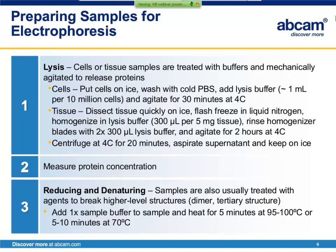The final step of sample prep is reduction and denaturation. This breaks down higher-level structures so that proteins can be separated during electrophoresis according to their primary amino acid structure. This is done by adding a buffer containing a reducing agent as well as detergent and heating generally for five minutes around 95 degrees Celsius. Heating at a lower temperature may be more preferable for some proteins, particularly multi-pass membrane proteins, which can aggregate at higher temperatures.